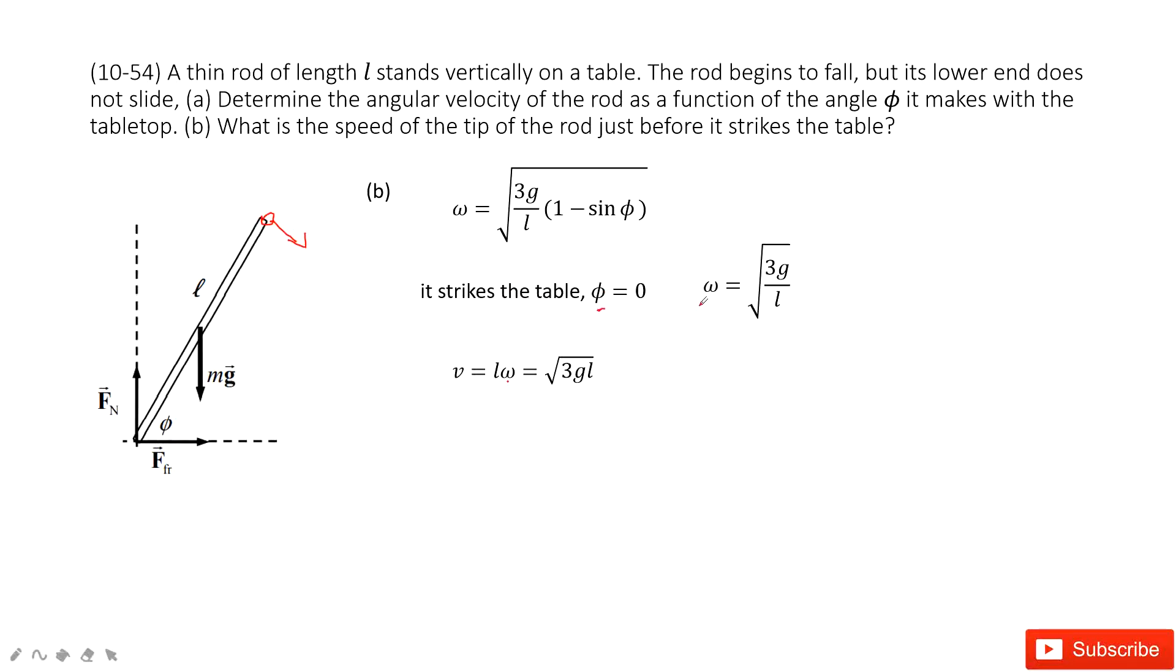If phi equals 0, we get the angular velocity at this moment. And at this moment, omega times L gives us the final linear speed of the rod just before it hits the table. Thank you.